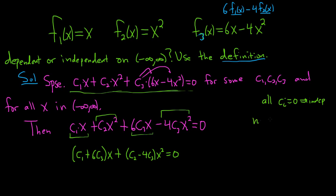But if we get that they're not all 0, the answer is dependent. So if they're all 0 and we have no choice, it's independent. If they're not all 0, it's dependent. So once we get to this step here,